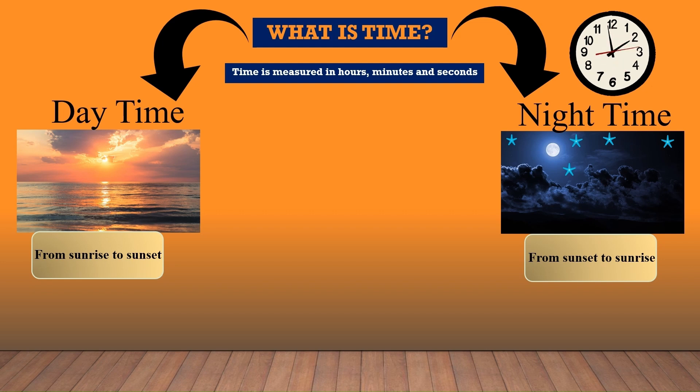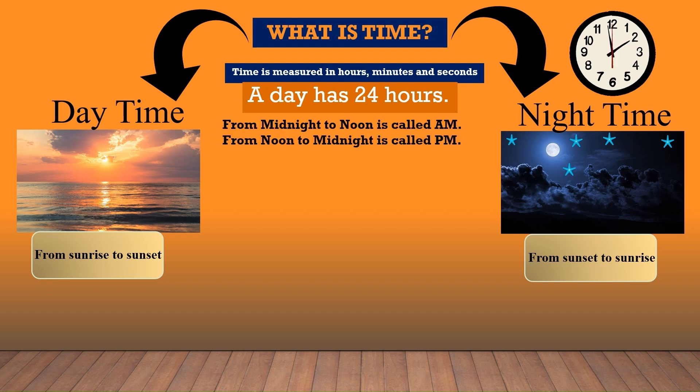Time is measured in hours, minutes and seconds. Second is the smallest standard unit of time. You can see the red needle, which is moving very fast — that is seconds. A day has 24 hours. From midnight to noon is called AM and from noon to midnight is called PM. You will learn more about this later.